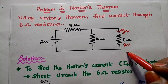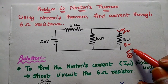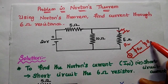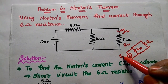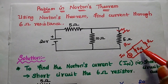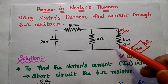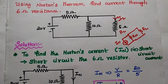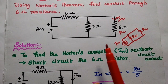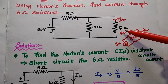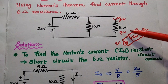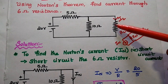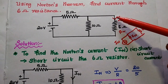Natan's theorem replaces the circuit with a current source in parallel with an equivalent resistance, and then the load resistance. We need to find Natan's current (short circuited current) and the equivalent resistance. The first step is to find the short circuited current for the 6 Ohm branch. We remove the 6 Ohm load resistor and short circuit that branch.